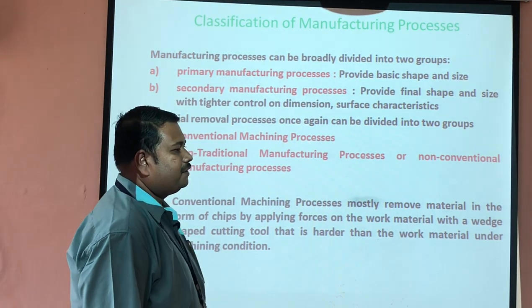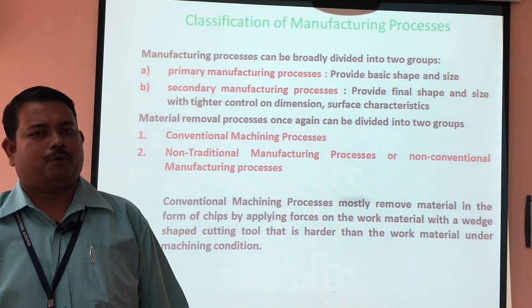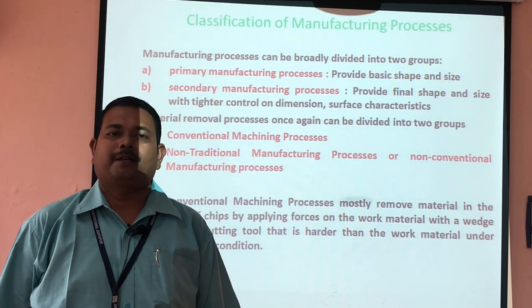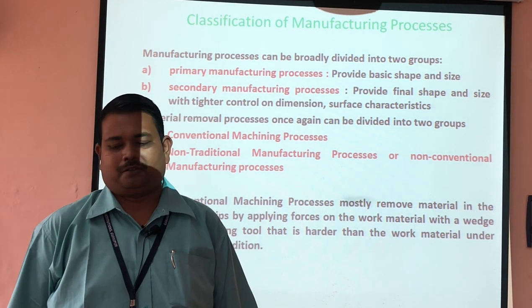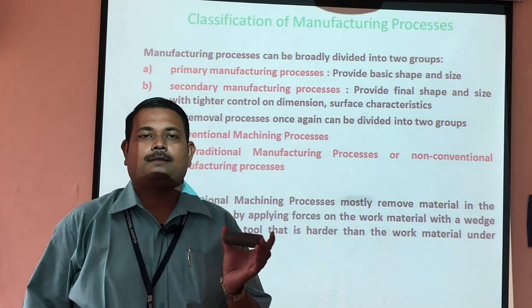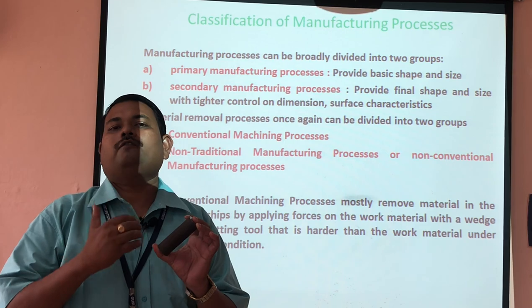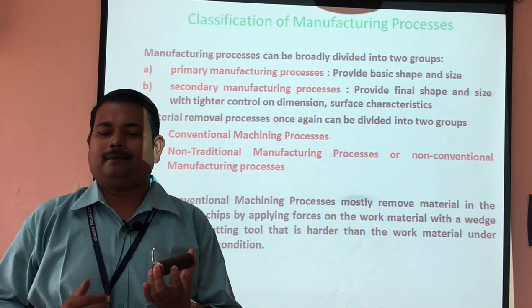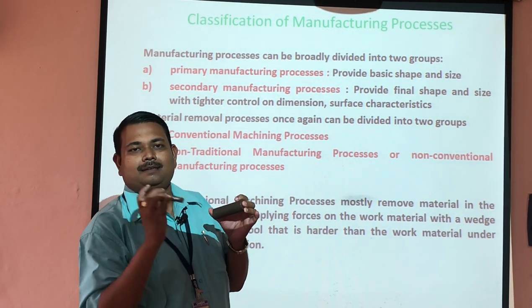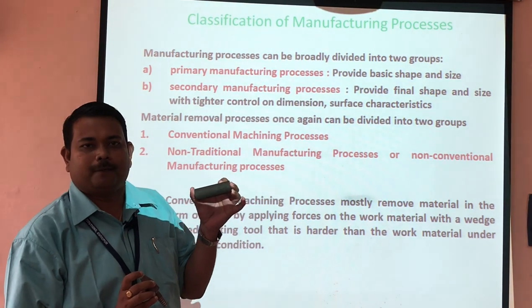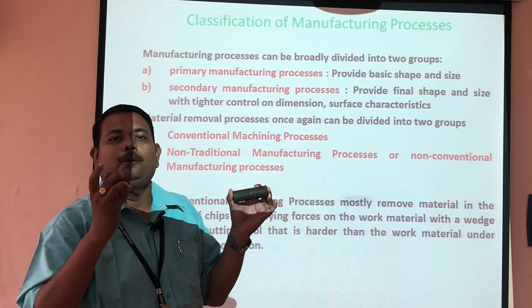First, we have to understand what is meant by manufacturing process. Manufacturing process deals with conversion of raw material into finished product according to its particular dimension, shape, and size. Consider this workpiece, which is a raw material made of mild steel. After performing a lot of operations on that particular workpiece, I can prepare a finished product. By using the machining process, I can convert this raw material into a finished product.